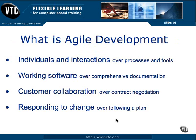Agile Development focuses on four things. The items on the left side are in a bigger font than the things on the right side to emphasize those are the more important things. Agile Development emphasizes individuals and interactions over processes and tools — the people involved and their interactions during development are more important than your process, tools, IDE, or programming language.